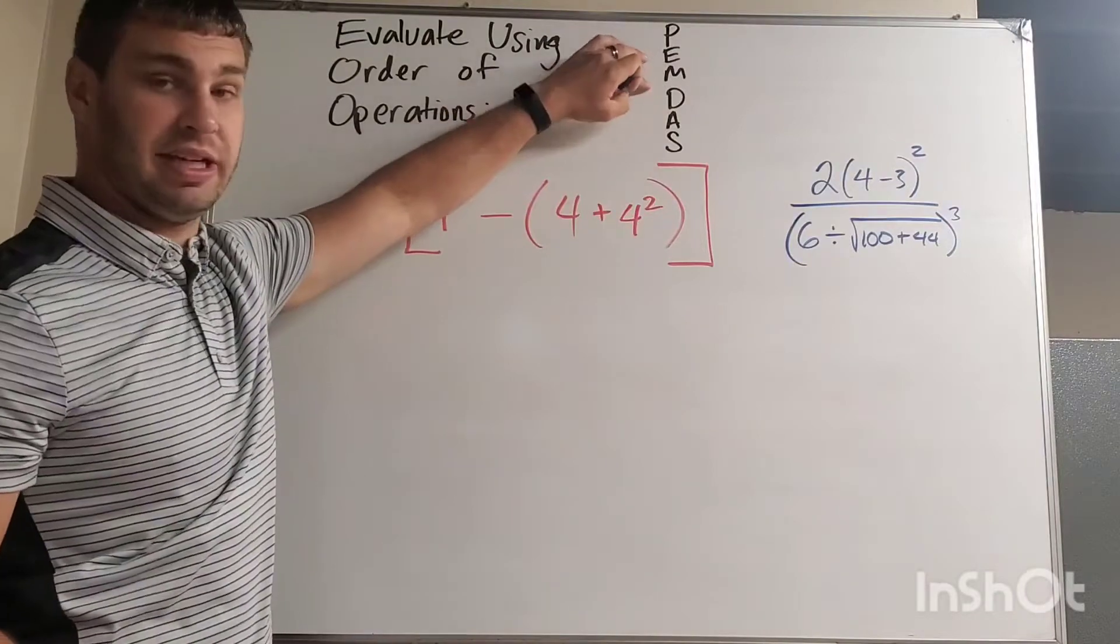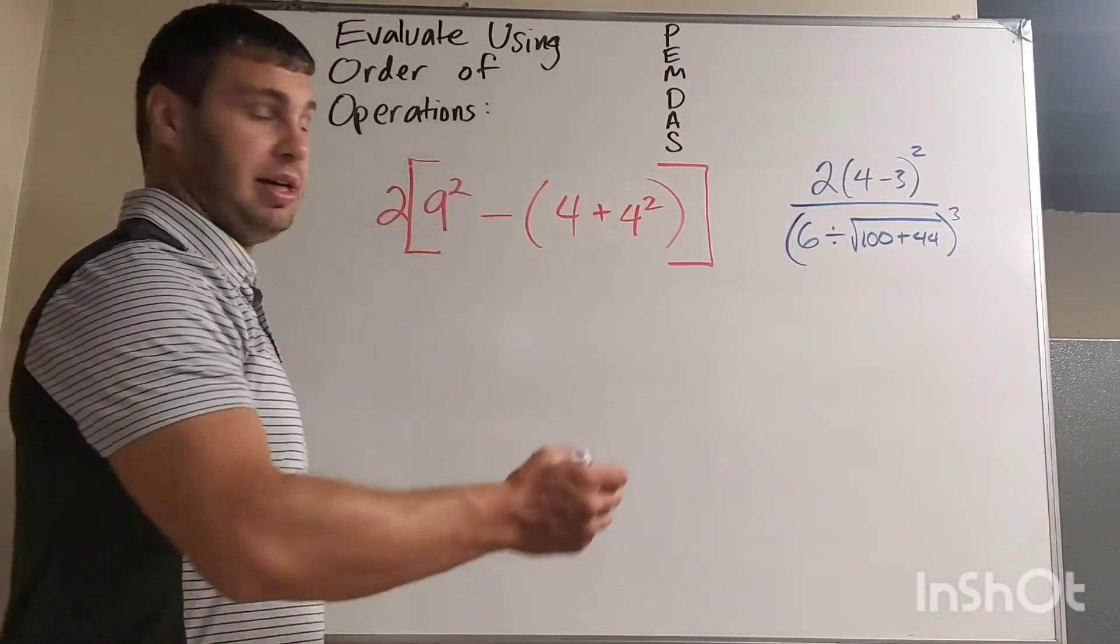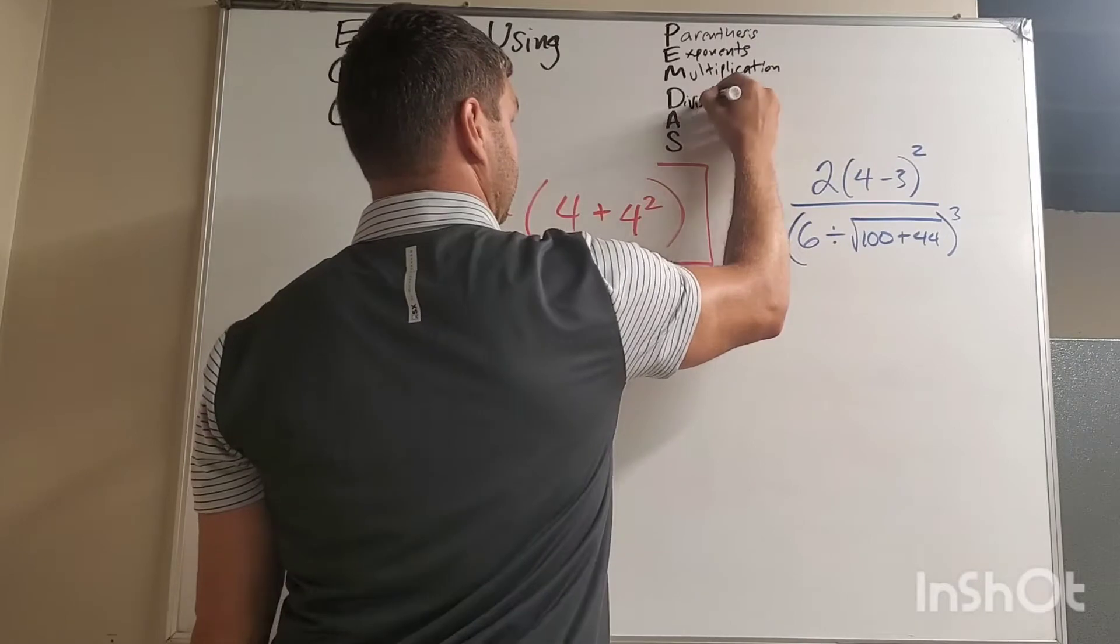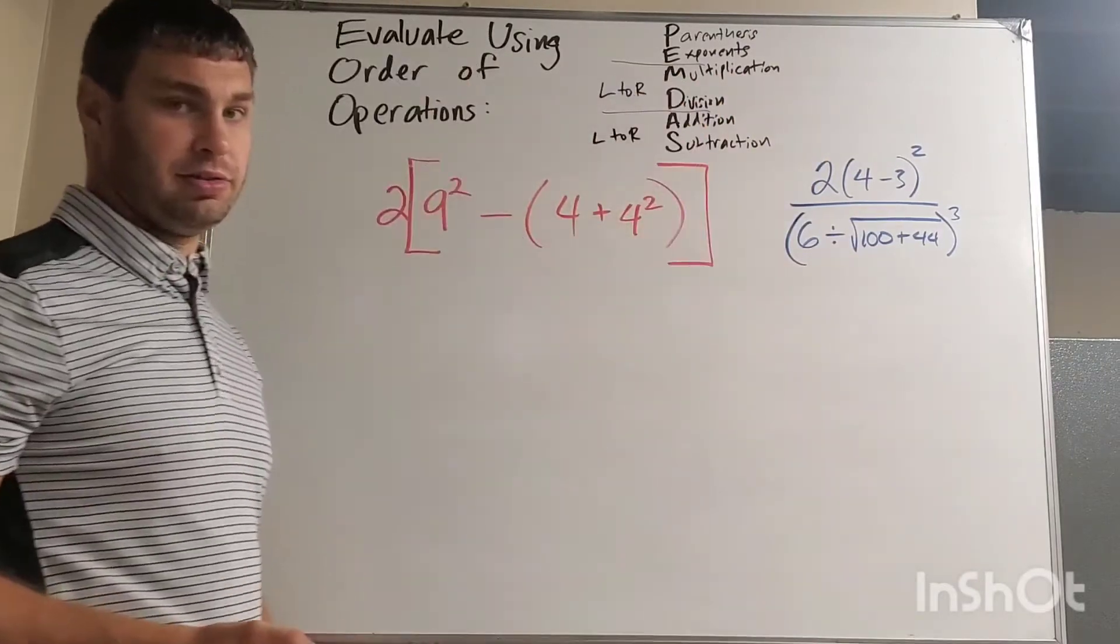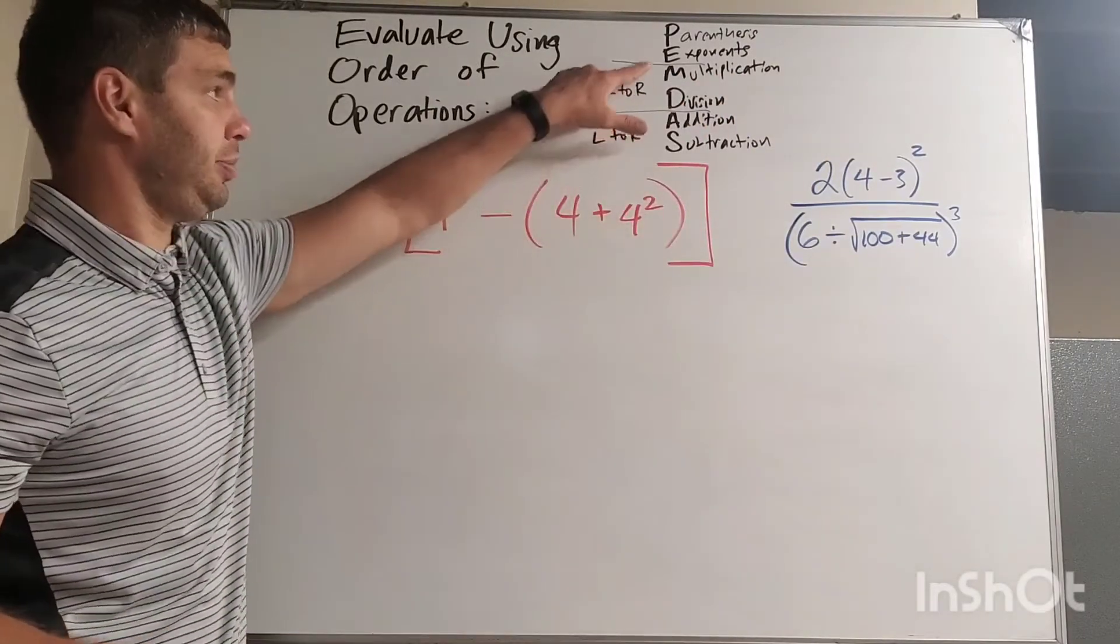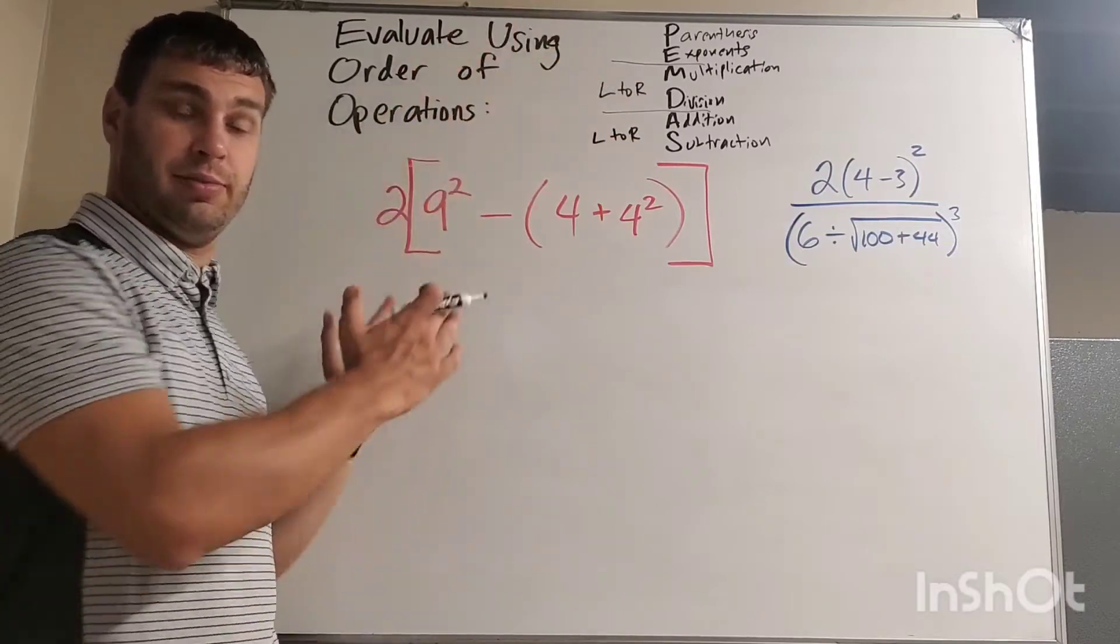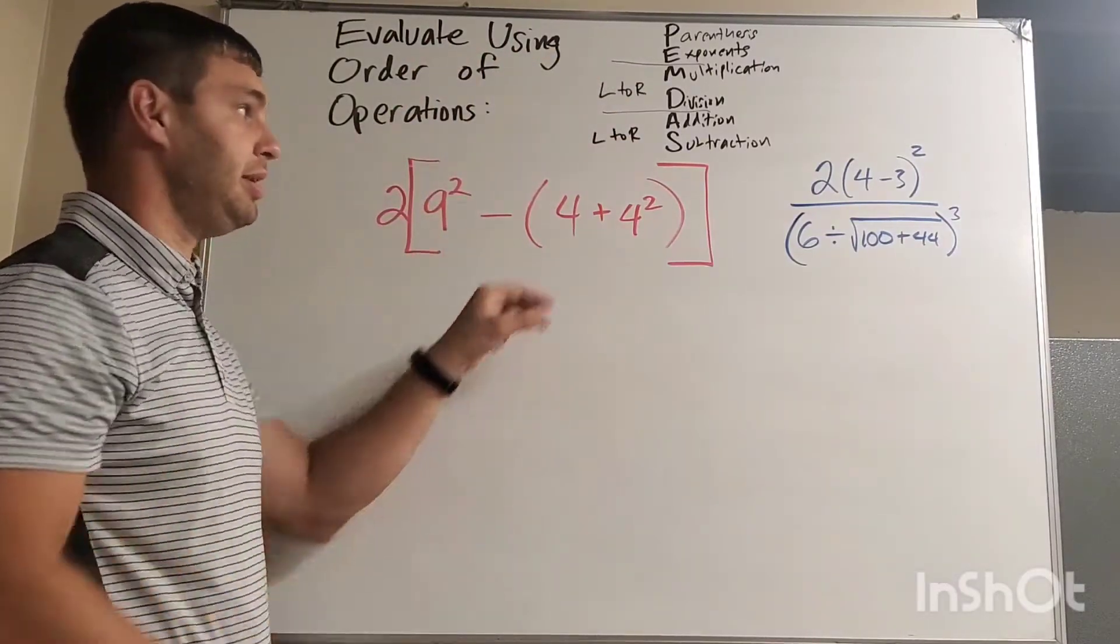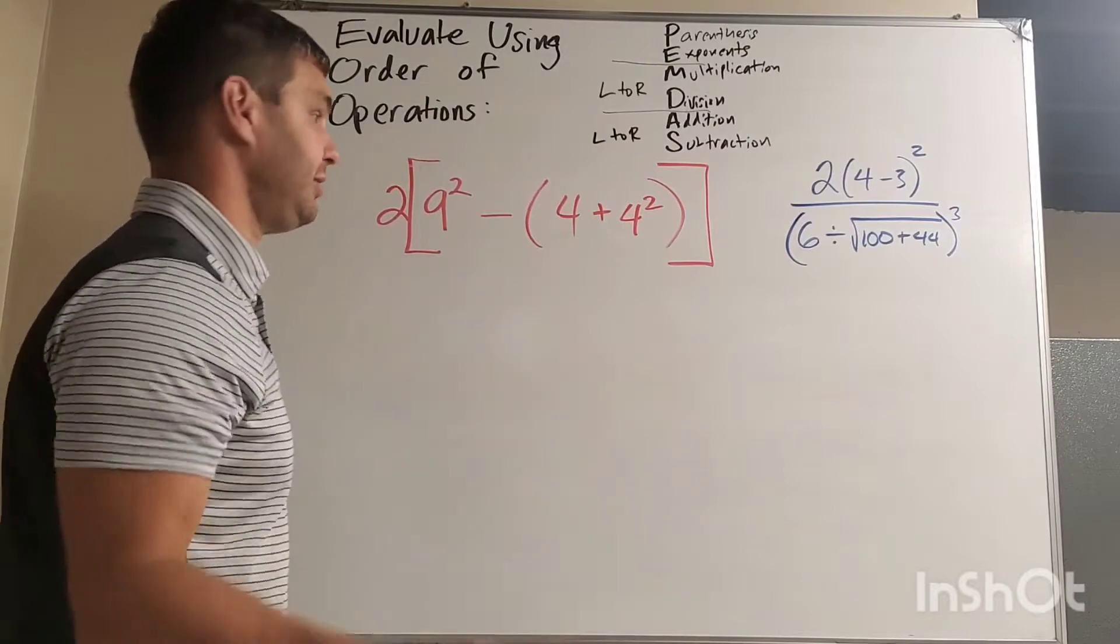that's our PEMDAS, which stands for parentheses, exponents, multiplication, division, and addition and subtraction. It does also write up there that multiplication and division, we do that in order from left to right when we get to that step. And the same thing for addition and subtraction, we do it from left to right when we get to that step.